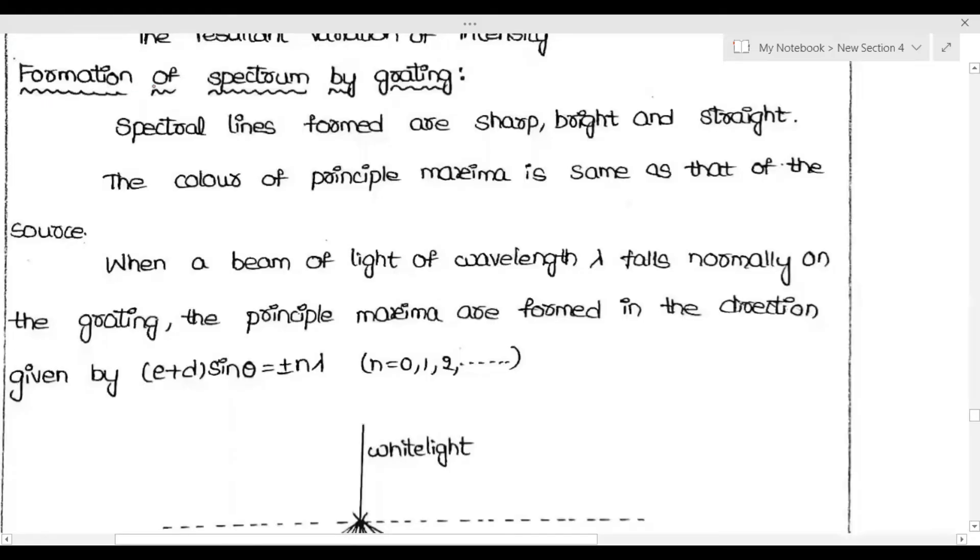Today's topic is formation of spectrum using grating. The spectrum has seven colors. Using grating, which means n number of slits, we can form the spectrum. If you use a grating to form a spectrum, we have to consider the grating.